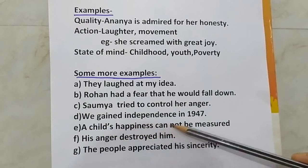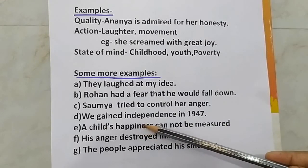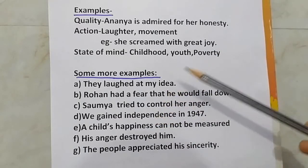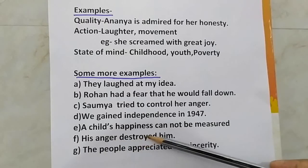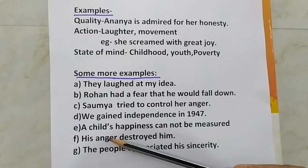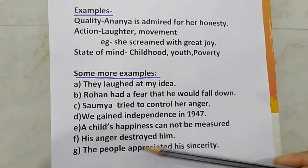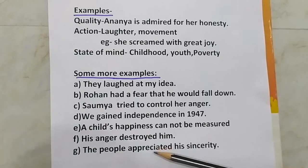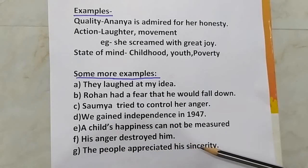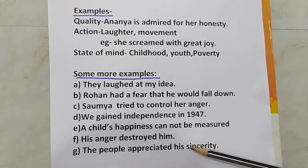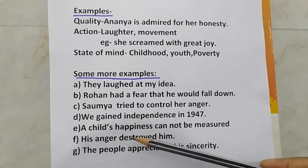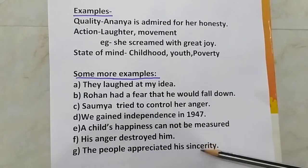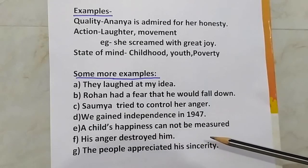E: A child's happiness cannot be measured — happiness is a feeling of the heart, you cannot measure it. F: His anger destroyed him — anger is an action. G: The people appreciated his sincerity — sincerity is a quality of a person. So idea, fear, anger, independence, happiness, and sincerity — all these are examples of abstract noun.